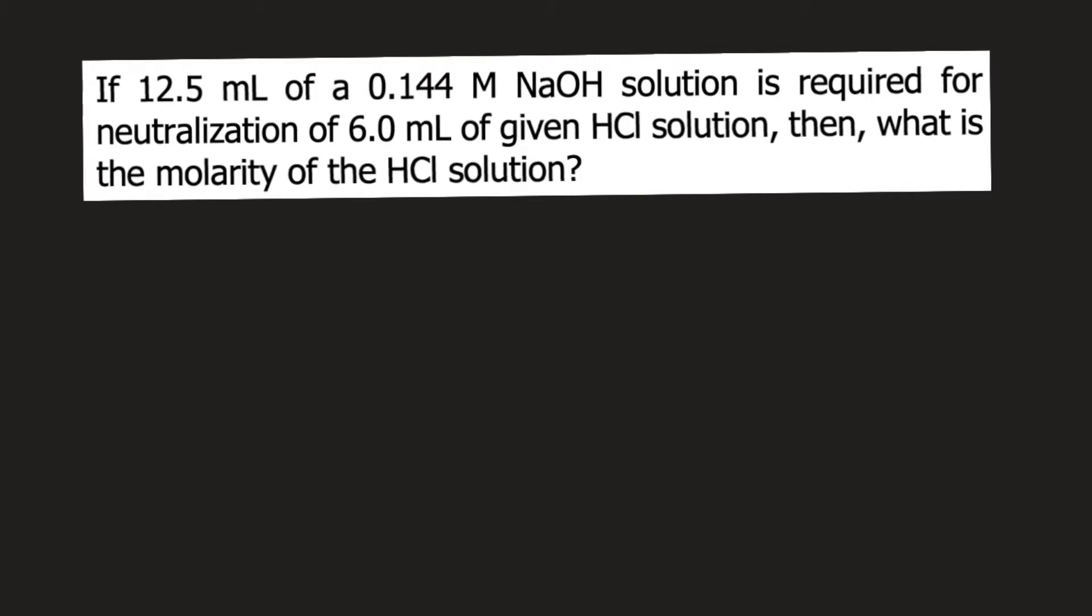So to answer this question, the first thing you need to do is write a balanced chemical reaction between NaOH and HCl. This is an acid-base reaction. Your acid is of course HCl plus your base is NaOH, and your products are salt NaCl plus water. If you check this reaction, this is already balanced.